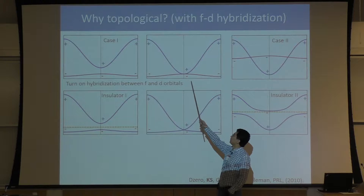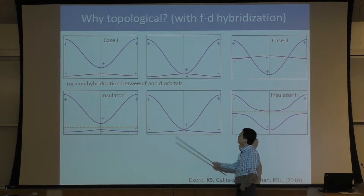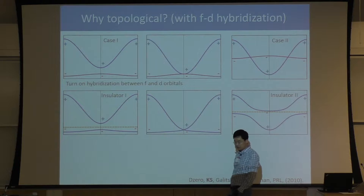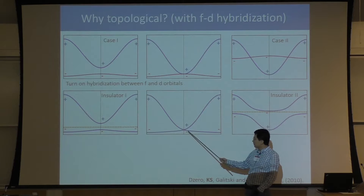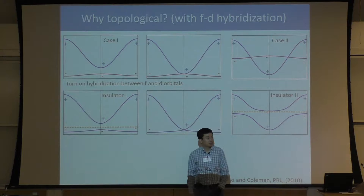For this marginal case, before we introduce hybridization, there is a two-fold degeneracy at the band touching points. One state comes from the conducting band with plus parity, the other from the localized electrons with opposite parity. We have two states at the same energy but with different symmetry. If we have two states with different symmetry, they can't talk to each other, they can't hybridize. So no matter how we introduce hybridization, these two states will remain degenerate. This marginal case will always be gapless.